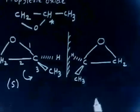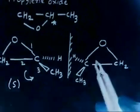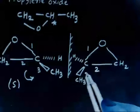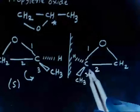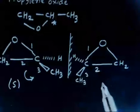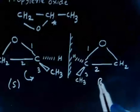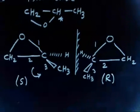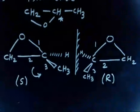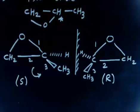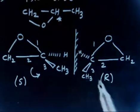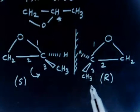Now let us check for the second one. Oxygen is one, this is two, and this is three — so this is clockwise, so this is R. These are the two structures of the two enantiomeric forms of propylene oxide: one is S and the other is R. One is clockwise, the other is anti-clockwise.